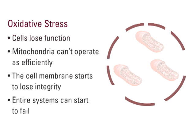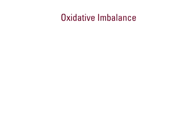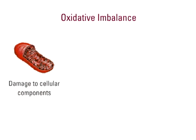As a result of this cellular damage, entire systems can start to fail. We'll give you some specific examples later in this course, but the concept to understand for now is that oxidative imbalance can lead to damage to cellular components.